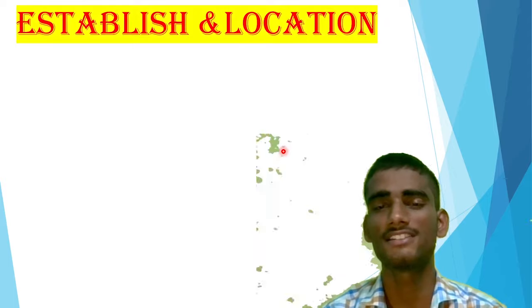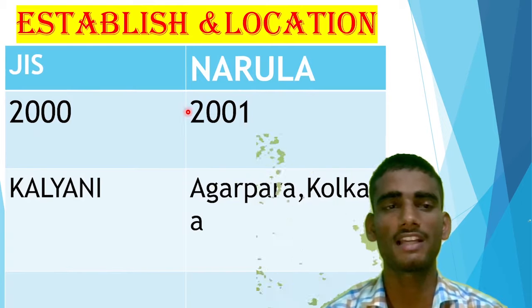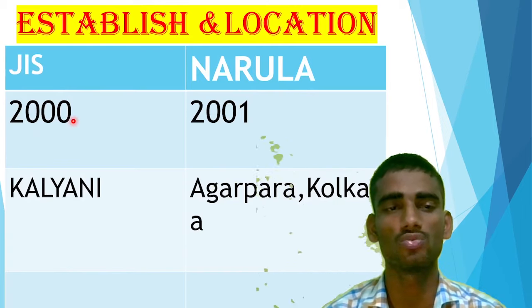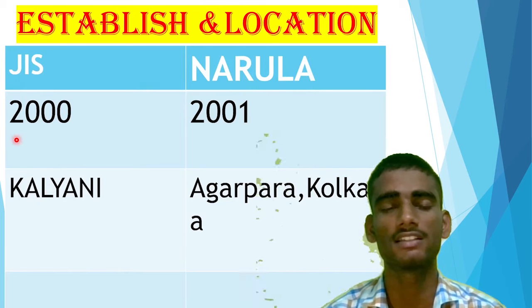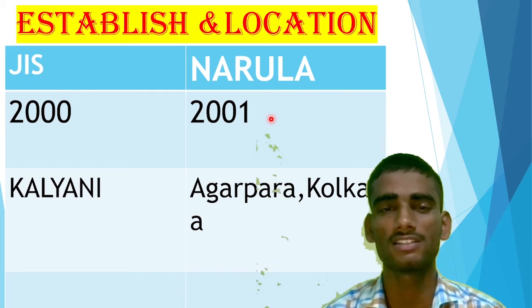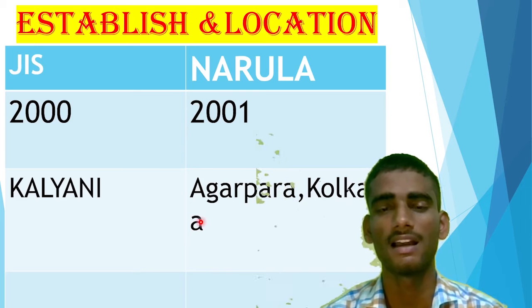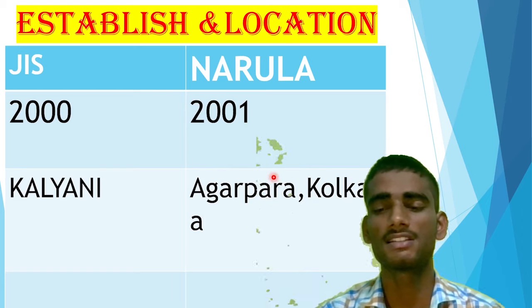Our first parameter is location and establishment — when these colleges were established and where they are located. JIS College of Engineering was established in 2000 and is situated in Kalyani, and is one of the prominent colleges under WBJEE. Narula was established in 2001, one year after JIS College of Engineering, and is situated in Agarpara, Kolkata.